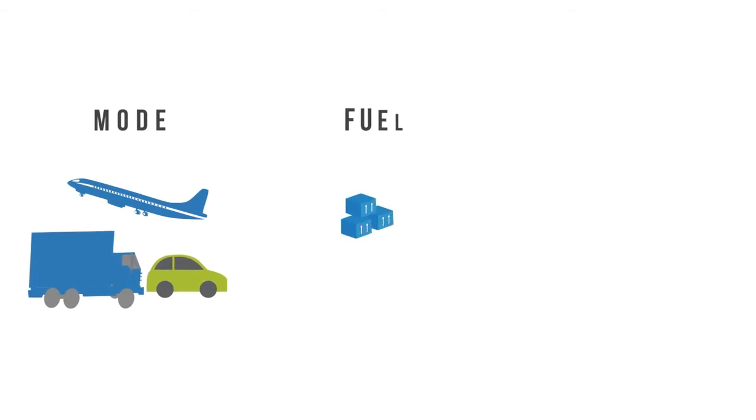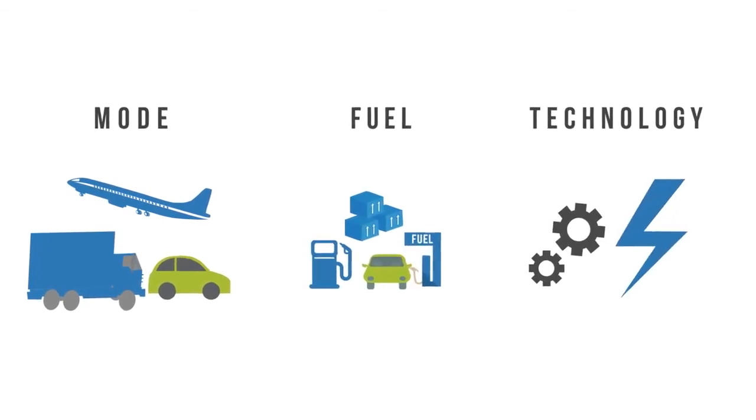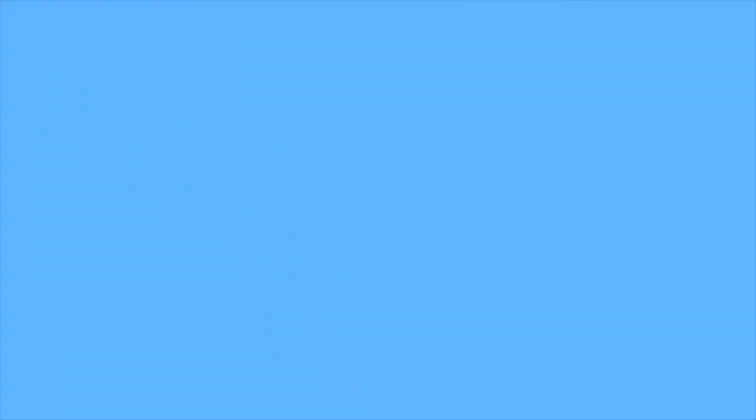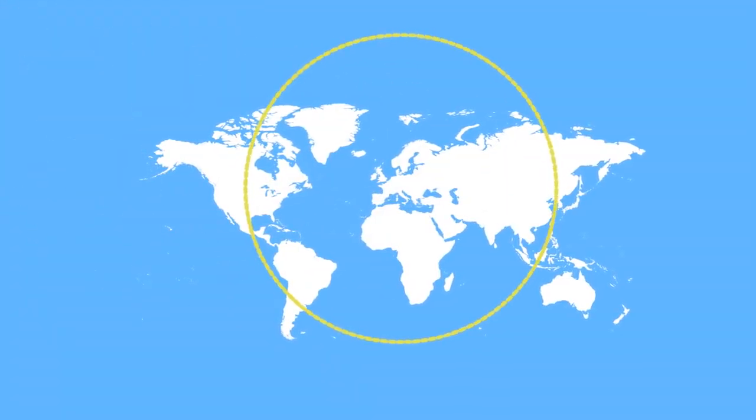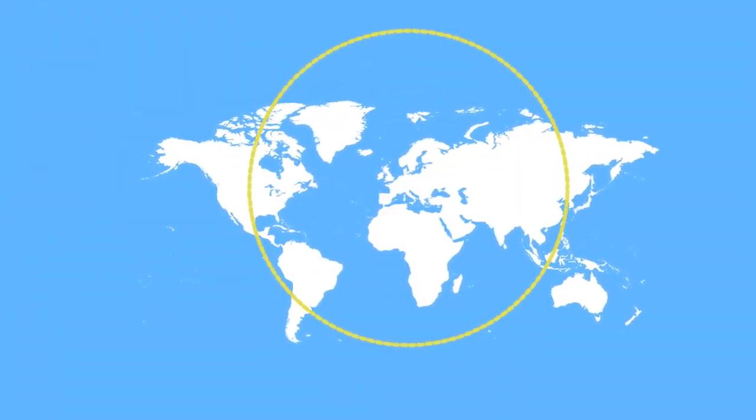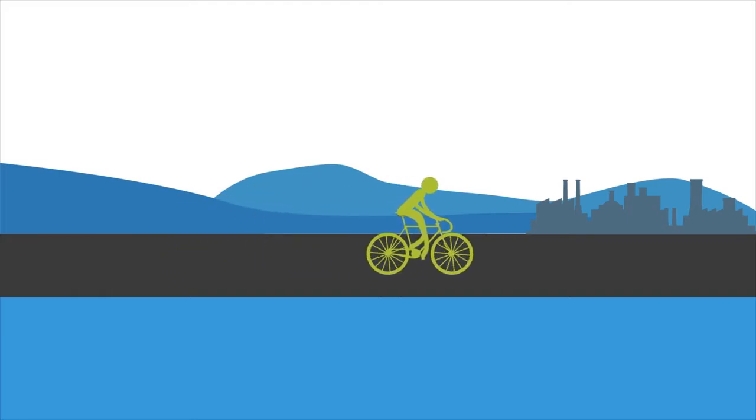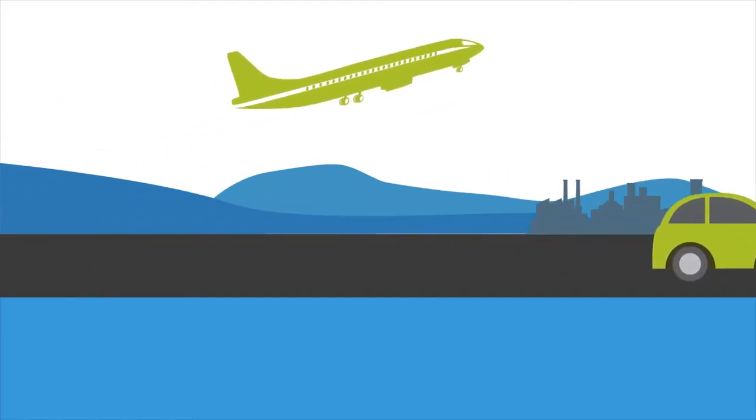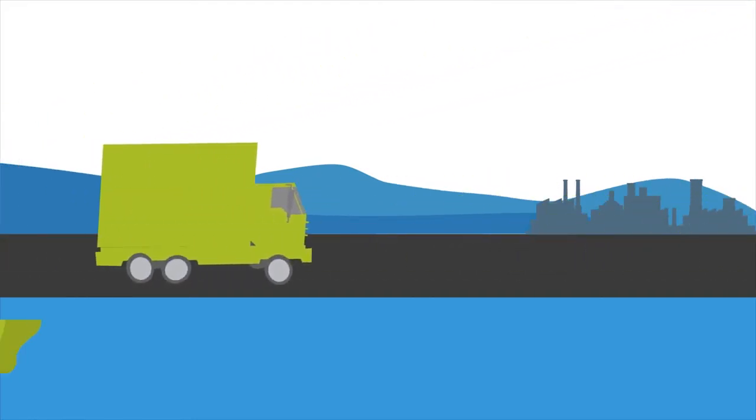One way to understand this complex system is by breaking it down into three different components: mode, fuel type and technology. Modes of transportation allow people and goods to move across air, land and sea. People often move by human power, cars and planes, while goods are transported by truck, rail or ship.